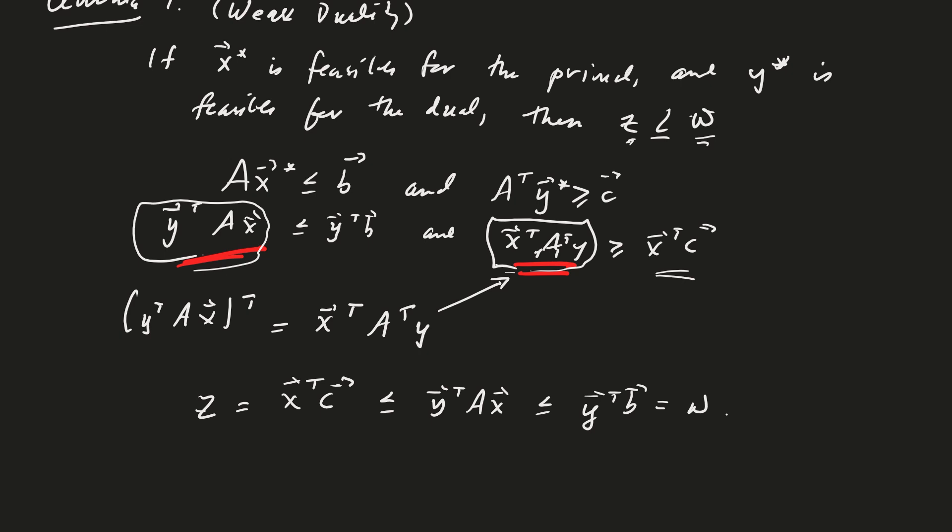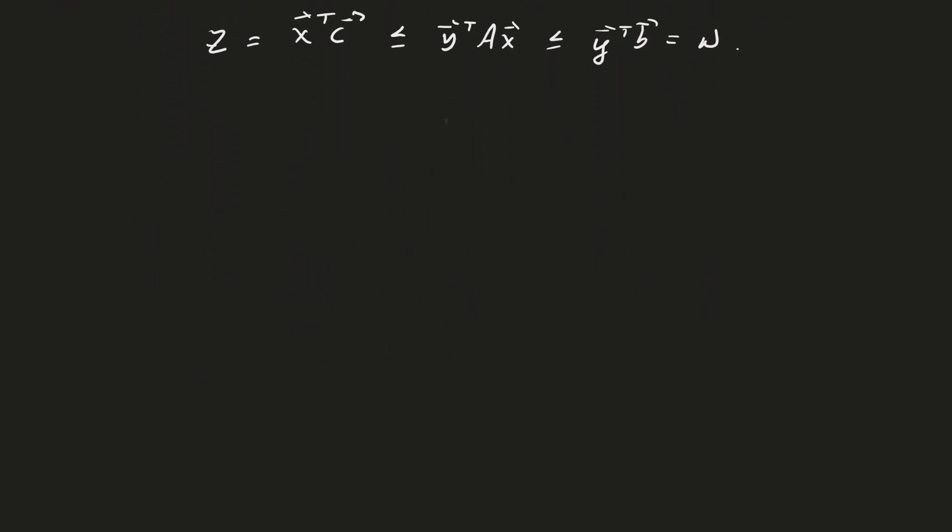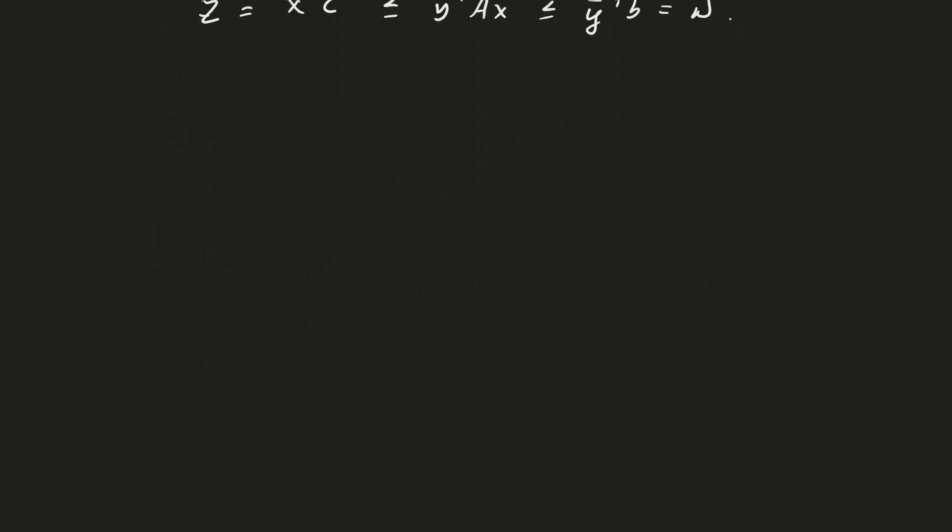Putting everything in a row: X transpose C, which is Z, is less than or equal to Y transpose AX, which is less than or equal to Y transpose B, which is W. We have proven weak duality: if X* is feasible for the primal and Y* is feasible for the dual, then the Z value for the primal is less than or equal to the W value for the dual.